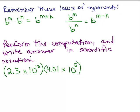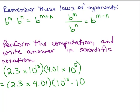Here's the problem: perform the computation and write the answer in scientific notation. I've got 2.3 times 10 to the 13th and 4.01 times 10 to the 5th. Here's an example where it's convenient to have it in scientific notation — otherwise this would just be a really long number. The first thing we want to do is use our commutative property. This is all multiplied together, and I'm going to rewrite it: 2.3 times 4.01 together, and the powers of 10 together — 10 to the 13th times 10 to the 5th.